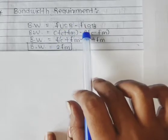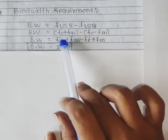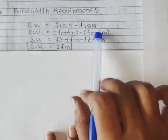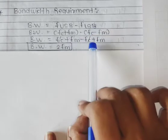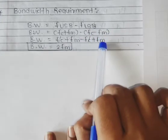So we will solve it. This is f_c + f_m, and if we take it inside the sign, it will be minus f_c and minus f_m.